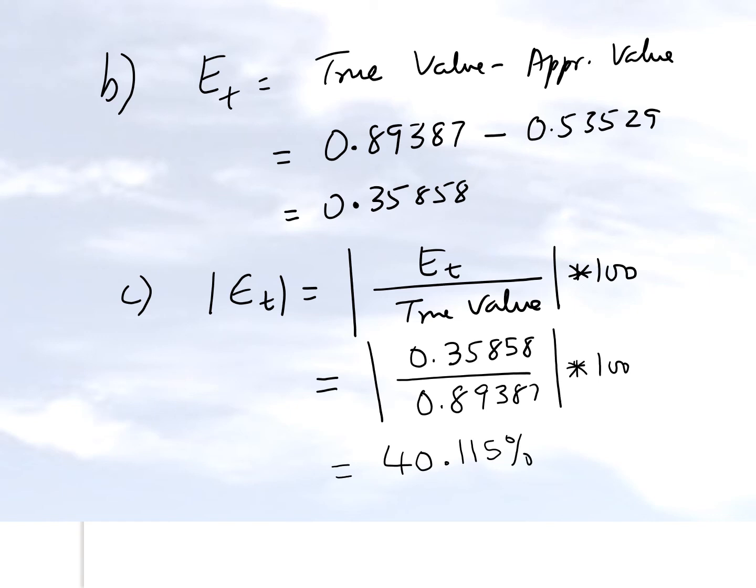But you got to understand this is only a single application trapezoidal rule. That's a little bit out of the ordinary because of the way the function behaves. If you look at the way the function behaves, this is your 0.1, and that's your 1.3.